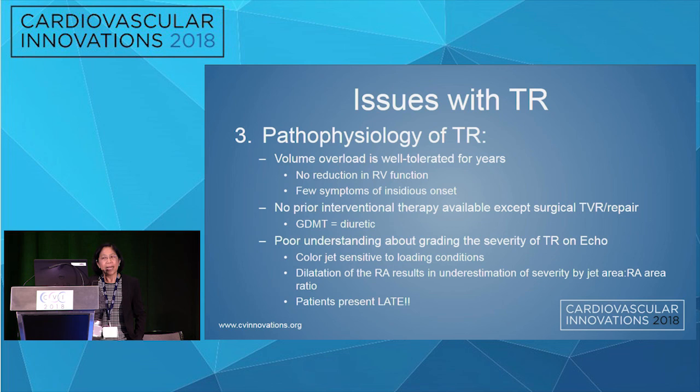The only guideline-directed medical therapy is a diuretic, along with treatment of pulmonary hypertension as a class II indication. There is a poor understanding of grading of severity. Color jet is also sensitive to loading conditions — one day you can have torrential and the next day mild TR, the same thing that happens with interventions: on the table you think you've done a perfect repair, the patient wakes up, hemodynamics change, and the repair doesn't look so good.